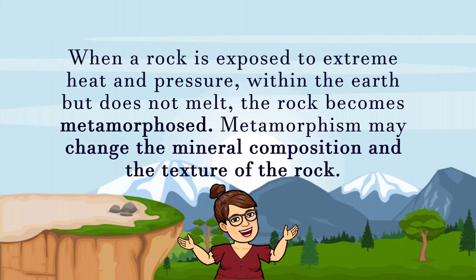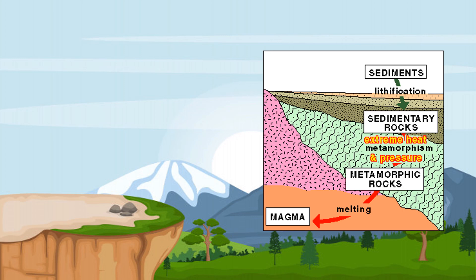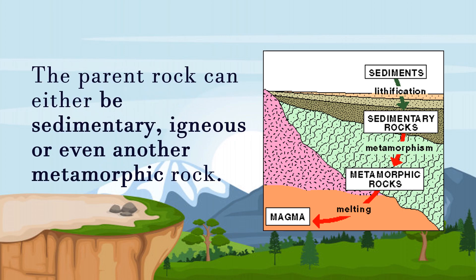When a rock is exposed to extreme heat and pressure within the earth but does not melt, the rock becomes metamorphosed. Metamorphism may change the mineral composition and the texture of the rock. For that reason, a metamorphic rock may have a new mineral composition and or texture. The parent rock can either be sedimentary, igneous, or even another metamorphic rock.